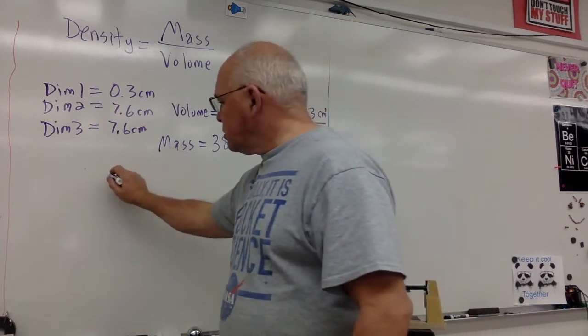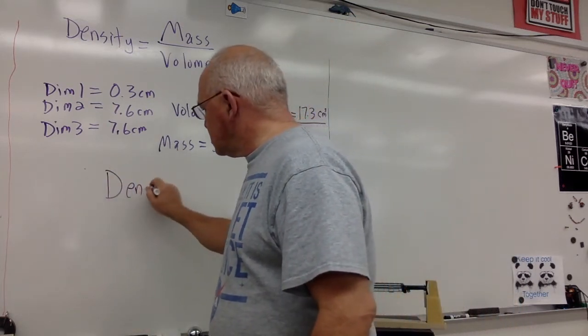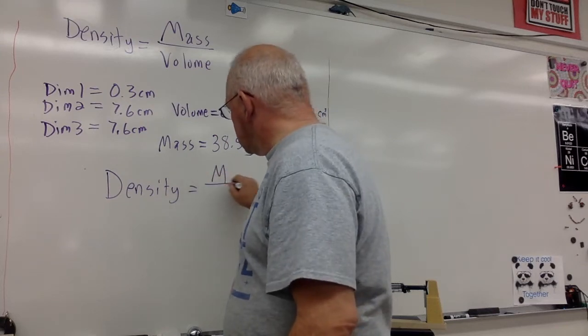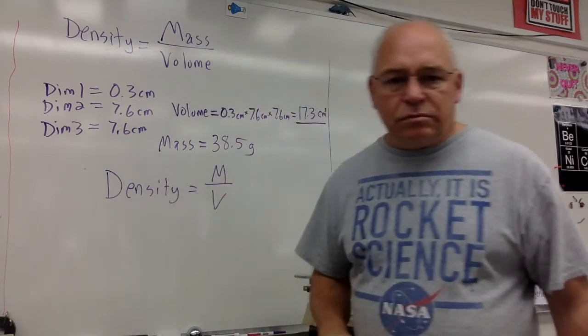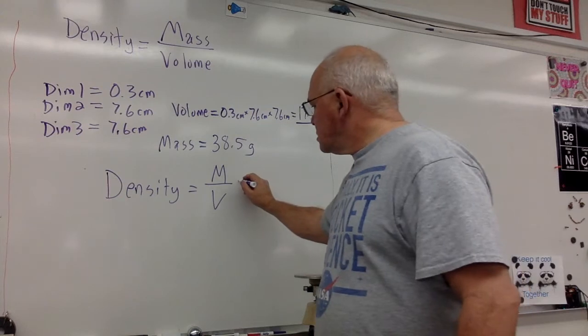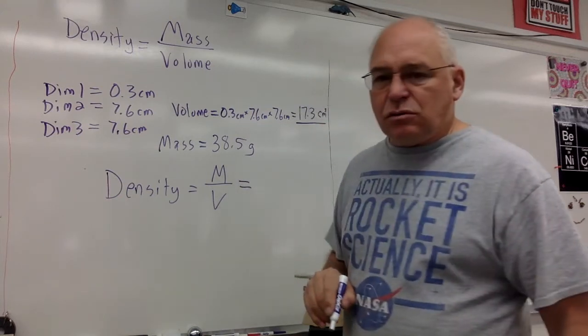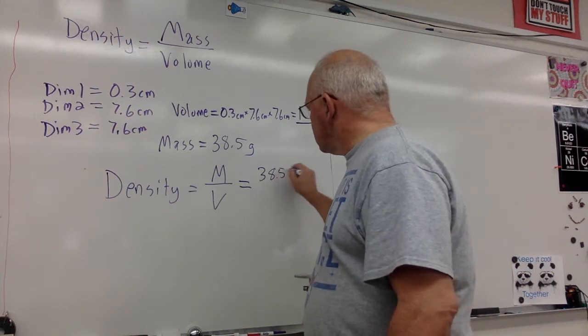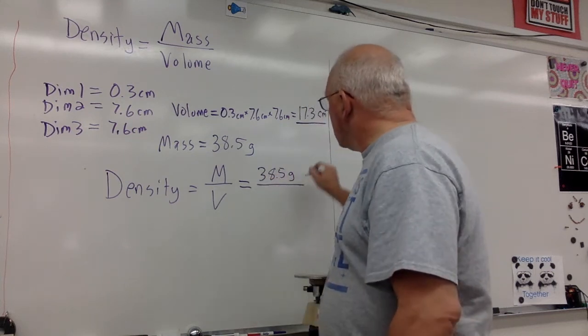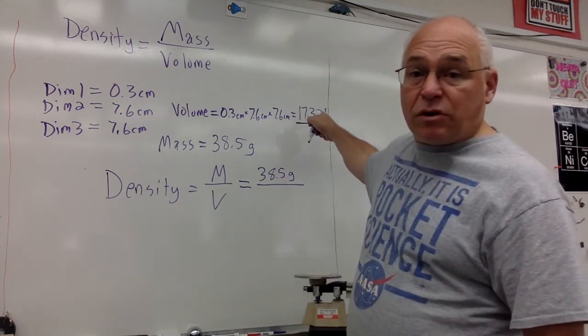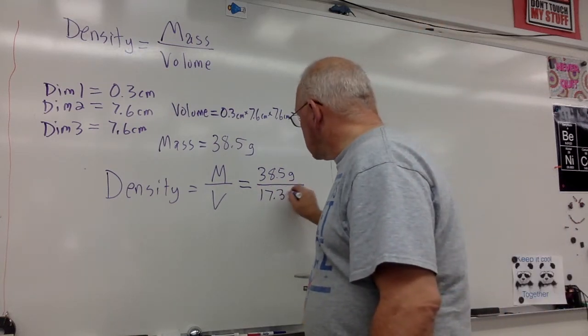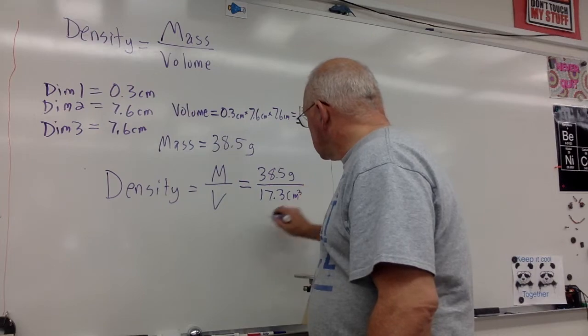Now, we know that the density is equal to the mass over the volume. That's equal to 38.5 grams over 17.3 cubic centimeters. What is that?